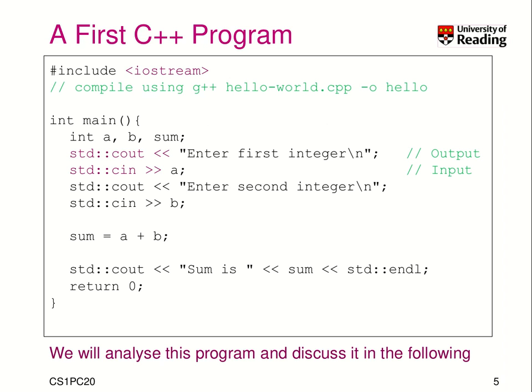We have something called Cout, which stands for our standard output channel. We move into this channel some data — particularly the text 'enter first integer' followed by a newline backslash n. That means this text gets printed on the standard output channel. This is equivalent to a printf('enter first integer').